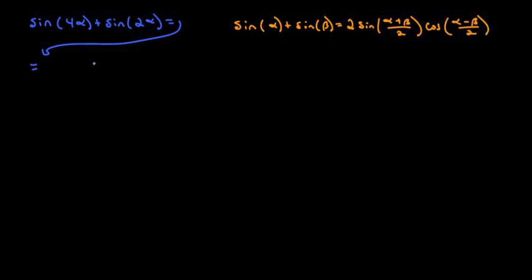So this will be equal to 2 times the sine of the sum of those two divided by 2. So it'll be 4 alpha plus 2 alpha over 2.